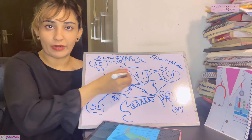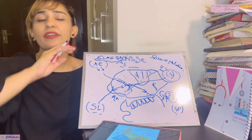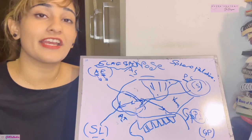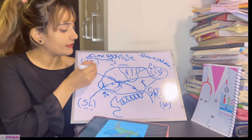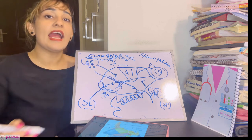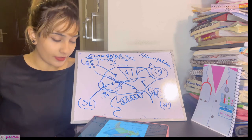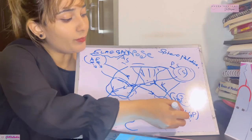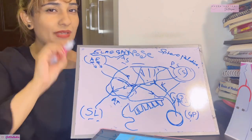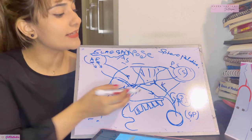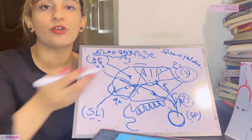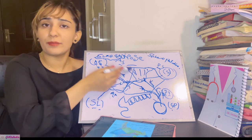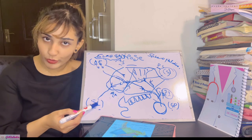For the nerve supply of the nasal septum: the anterosuperior part is always supplied by the anterior ethmoidal nerve. Just posteriorly, the area is supplied by the nasopalatine branch of the pterygopalatine ganglion.